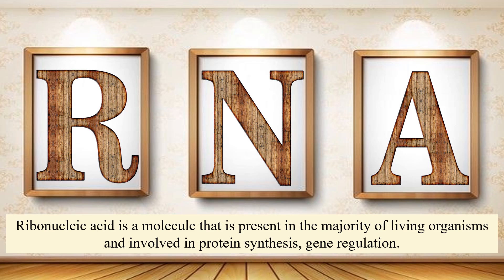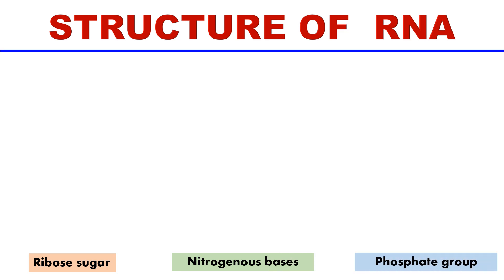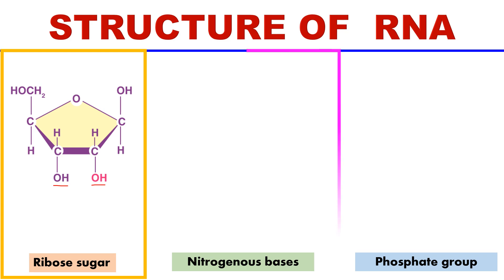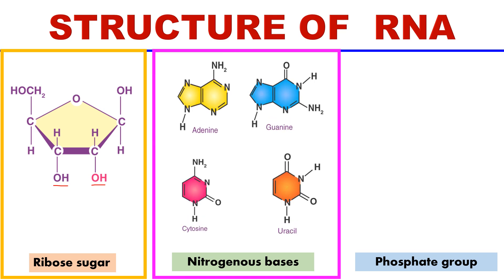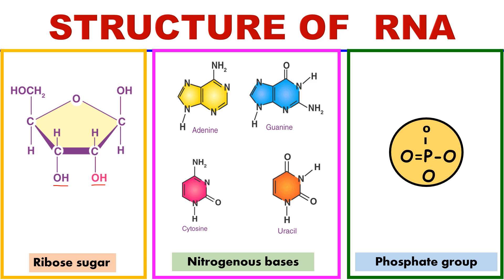The structure of RNA is formed of three elements: ribose sugar, nitrogenous bases, and a phosphate group. DNA has deoxyribose sugar, but RNA has ribose sugar, which has two hydroxyl groups attached to the second and third carbon atoms. The nitrogenous bases in RNA are adenine, guanine, cytosine, and uracil. Thymine is absent in RNA; instead we have uracil.